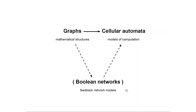In Boolean networks the nodes are related to each other and there is feedback happening between different nodes. In certain arrangements Boolean networks are basically cellular automata models — they're a bit similar but work a little differently because the neighborhoods are defined differently.